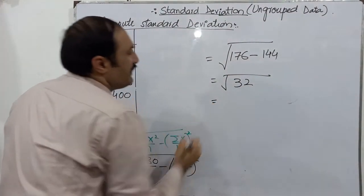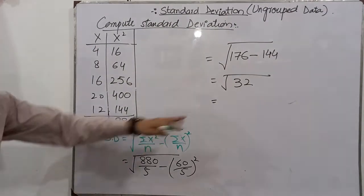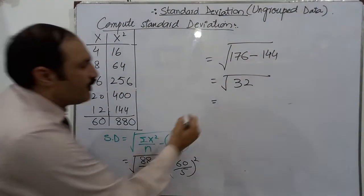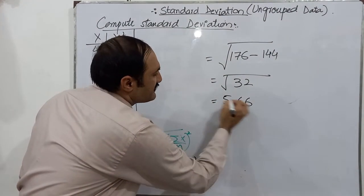Here is subtract these 176 from 144. What is the square root of 32? We can calculate it from the calculator. 5.666.